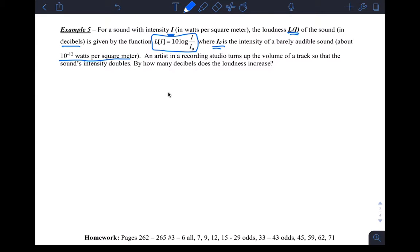So let's say, this is the important part, artist in a recording studio turns up the volume so the intensity doubles. So then they ask, how many decibels does the loudness increase? Okay, so decibels, meaning I'm going to be looking at L of i, okay, two L of i's, and if I want to see an increase, it's basically I'm going to subtract two L of i's to see a difference between them, which will hopefully, if you subtract the bigger minus the smaller, give you an increase, okay?